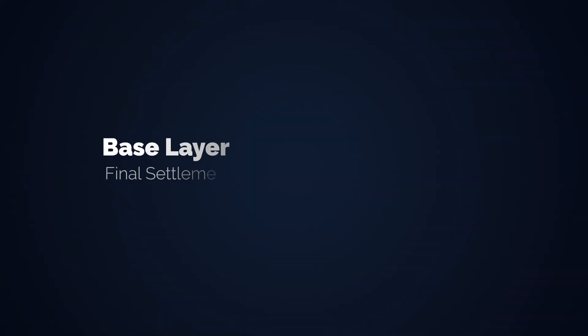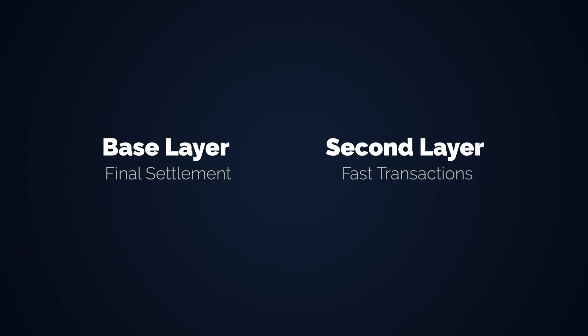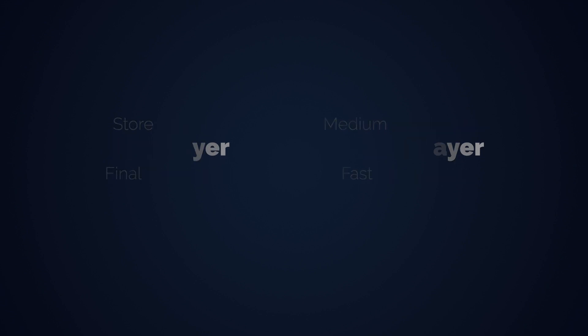The point I want to make here is that the base layer of a monetary system is usually not the layer with the fastest transaction speeds. Quite the opposite — the base layer offers final settlement. You can assume Bitcoin transactions to be final after about an hour, and that on a global scale. It's by far the fastest global final settlement we've ever had.